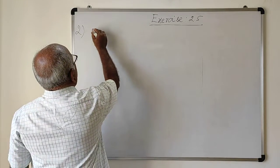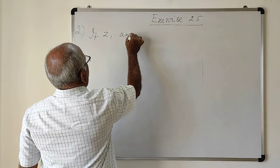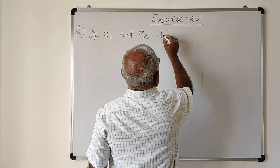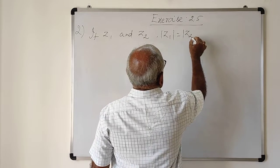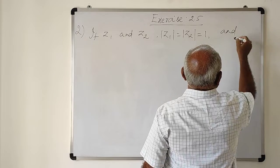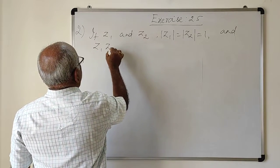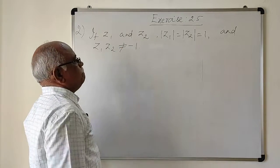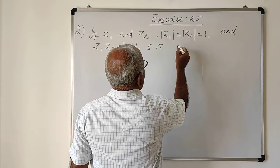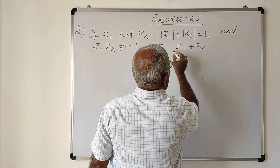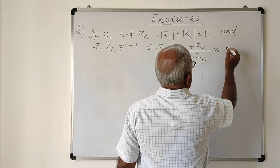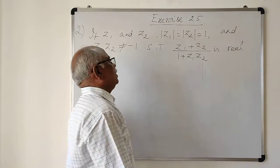The second sum is: if Z1 and Z2 are any two complex numbers, and mod of Z1 equals mod of Z2 equals 1 is given, and also one more condition — Z1 into Z2 is not equal to minus 1. Using these conditions, we have to show that Z1 plus Z2, divided by 1 plus Z1 into Z2, is a real number.